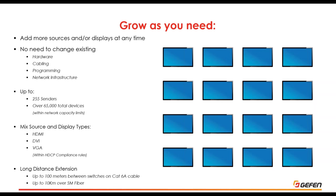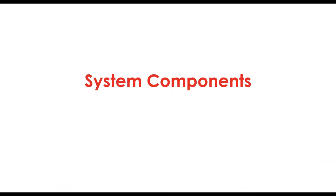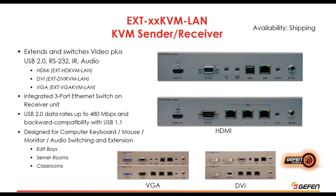You can do long-distance extensions — using Cat6 you can go up to 100 meters between switches, and up to 10 kilometers over single-mode fiber. Now let's look at system components. The first part is senders and receivers. Geffen has a line of both KVM senders and receivers, and also video-only units. The KVM devices, where this originally started, are made for HDMI, DVI, or VGA.